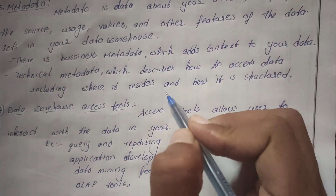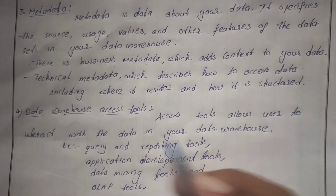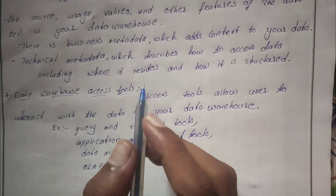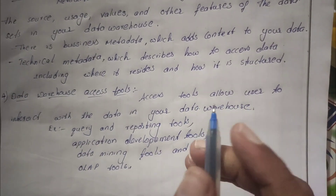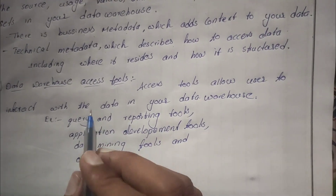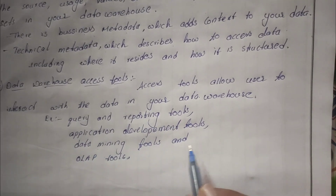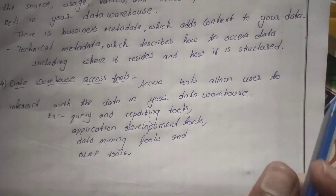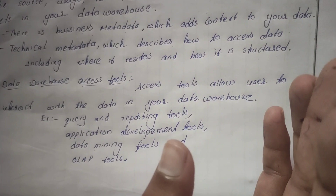The fourth component is data warehouse access tools. Access tools allow users to interact with the data in your data warehouse — for example, through query and reporting tools, application development tools, data mining tools, and OLAP tools.